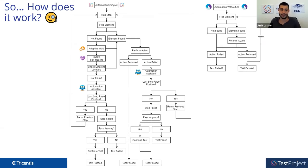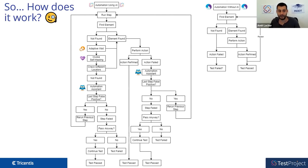Now let's look at what happens when we combine AI with automation. We run a step, find the element, perform an action, and pass — straightforward so far. But if we can't find the element, we apply Adaptive Wait, which waits for the element to become available on the page. This all happens automatically by default as a global setting, which you can also configure per step or across your entire test.